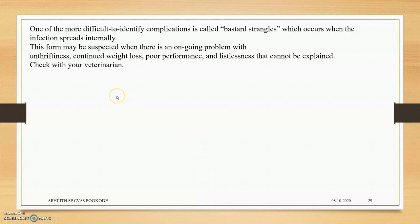One of the more difficult-to-identify complications is called bastard strangles, which occurs when the infection spreads internally into the intestinal flora. The Streptococcus bacteria will produce more lesions internally, which can even lead to colic.